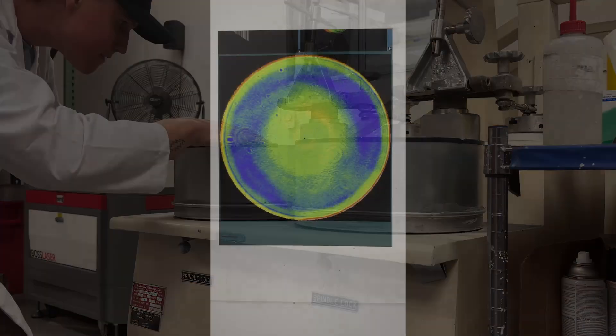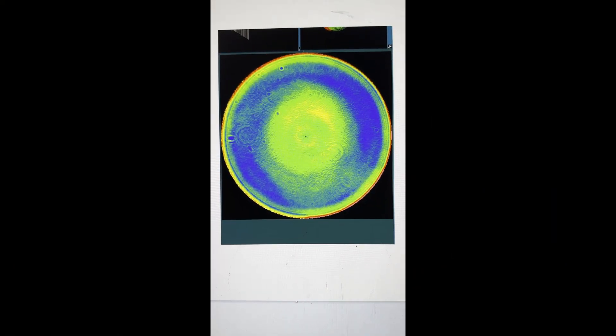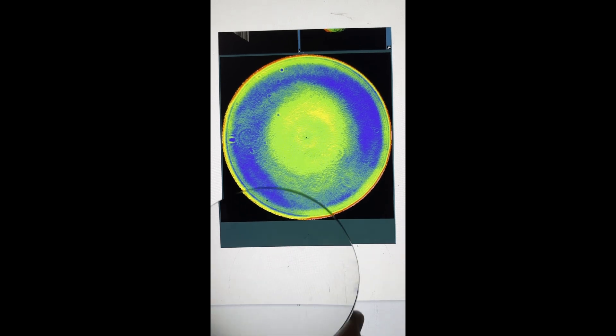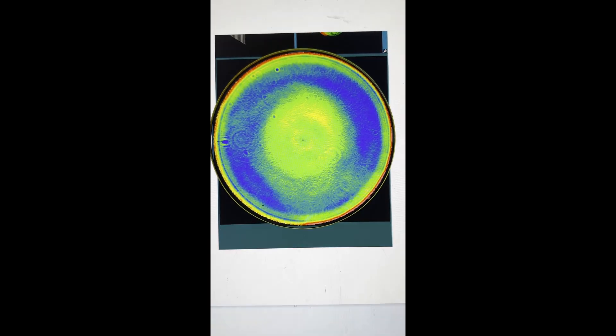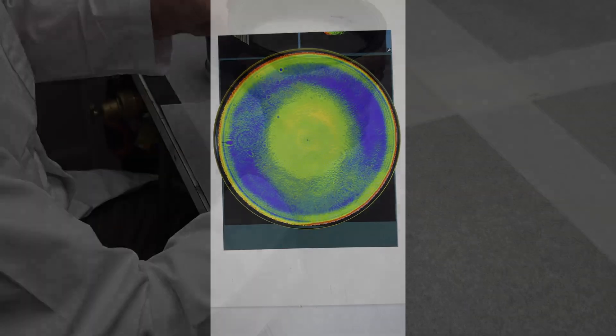First, we assemble the objective and we map the optical wavefront using the Zygo Interferometer. We identify the most serious aberration first.